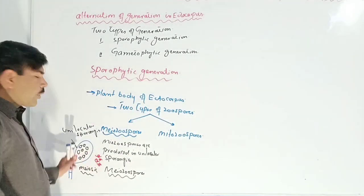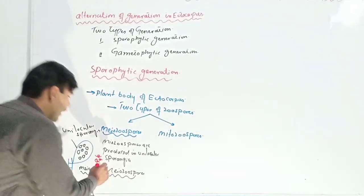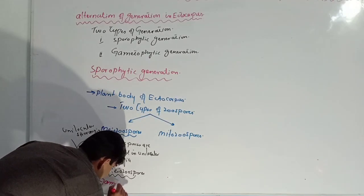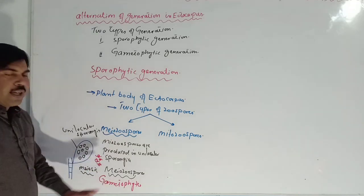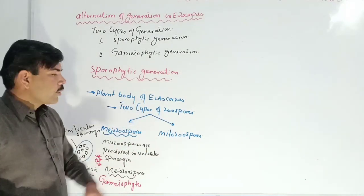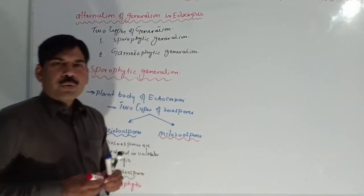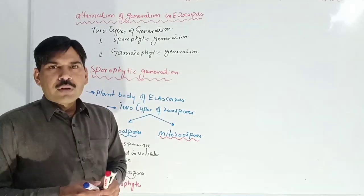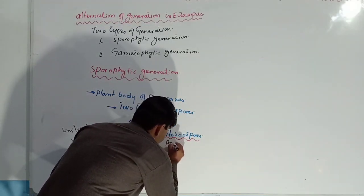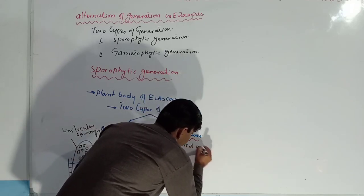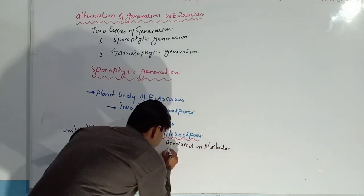These meozoospores will germinate to produce a new haploid plant body, which will be known as the gametophyte. This means the sporophyte plant body gives rise to the gametophyte plant body. Now, the mitozoospores are produced in the plurilocular sporangia.